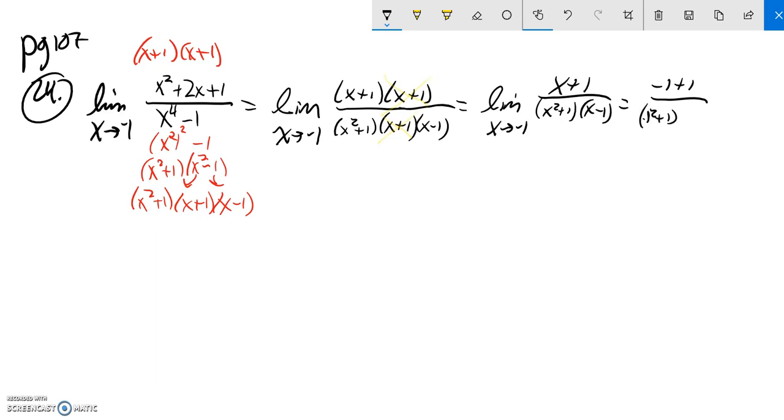I'm sorry, negative 1 squared. I'm going to rewrite that. It doesn't change it, but I want to be accurate. Negative 1 squared plus 1 times negative 1 minus 1. I'm plugging in negative 1.